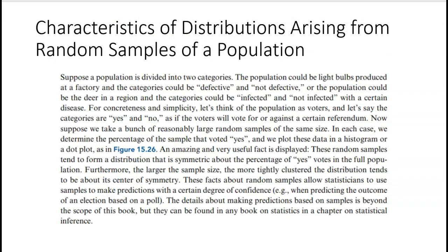We're going to be talking about characteristics of distributions arising from random samples. Suppose a population is divided into two categories. Maybe the population is light bulbs produced and the categories would be defective or not defective. Or the population could be deer and the category could be infected, not infected. For simplicity, let's think of the population as voters. Let's say the categories are yes and no. The voters will vote for or against a certain referendum. Suppose we take a bunch of reasonably large random samples of the same size. In each case, we determine the percentage of the sample that voted yes and we plot them.